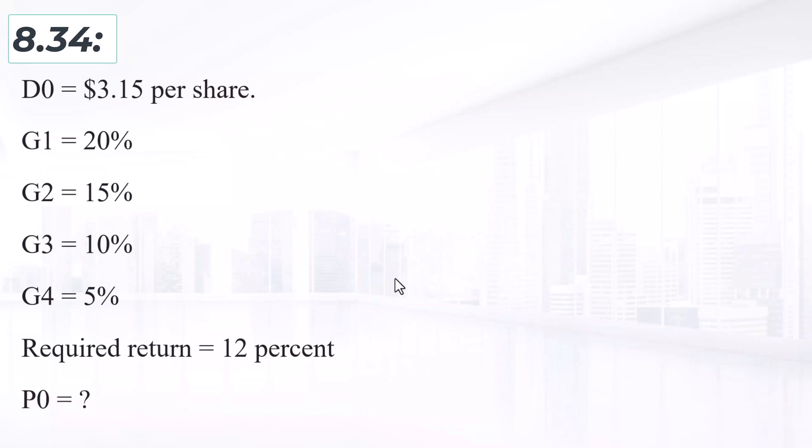Storico Co just paid a dividend of $3.15 per share. The company will increase its dividend by 20% next year and then reduce its dividend growth rate by 5% per year until it reaches the industry average of 5% dividend growth.